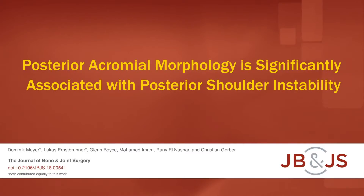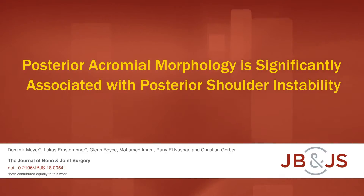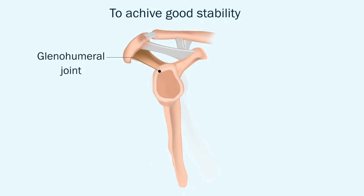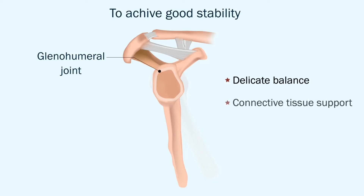This is an audio-visual representation of a study published in the Journal of Bone and Joint Surgery in 2019. To achieve good stability, the glenohumeral joint requires a delicate balance of bony anatomy, connective tissue support, and muscular control.